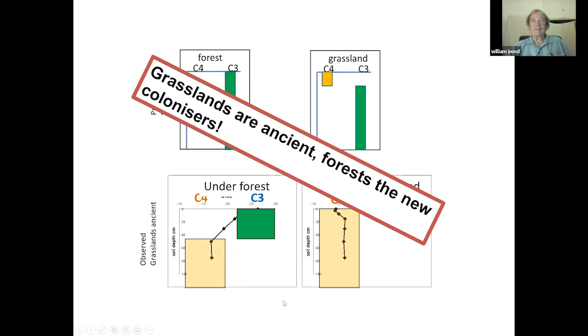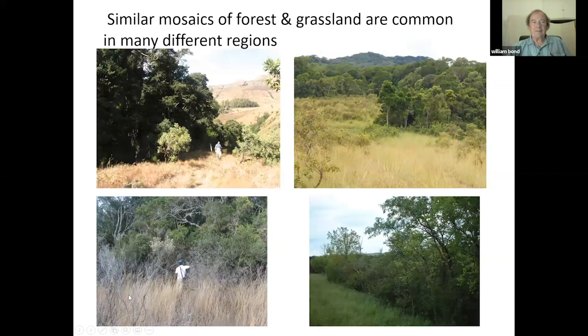What a shock — the grasslands are ancient, and the forests are the new colonizers. That really rattled our prior conceptions. Similar mosaics of forests and grasslands occur all over the place: in South Africa, Gabon, Madagascar — where after a fire, the fire stops at the forest edges rather than burning down the forest — and in North America. The more we look at the age of grasslands, the more we find they are ancient, much older than deforestation would suggest.